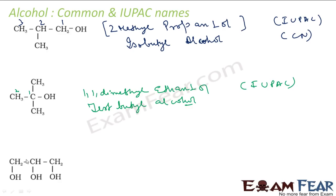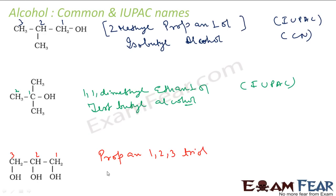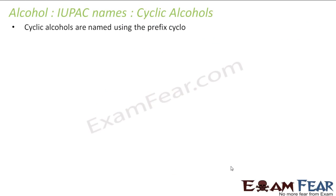The next compound: it is 1, 2, 3 carbons — meth-eth-prop, so it is propane. The functional group is alcohol, and I have OH at positions 1, 2, and 3 — so it will be propane-1,2,3-triol. The common name of this is glycerol. We'll study more about glycerol and glycol in the next slides.